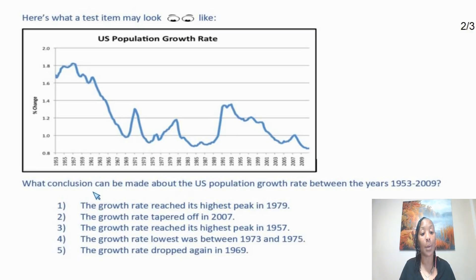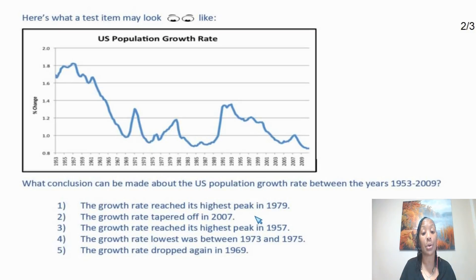Here's what a test item may look like. What conclusion can be made about the U.S. population growth rate between the years 1953 through 2009? You have five options: one, the growth rate reached its highest peak in 1979; two, the growth rate tapered off in 2007; three, the growth rate reached its highest peak in 1957; four, the growth rate lowest was between 1973 and 1975; and five, the growth rate dropped again in 1969.